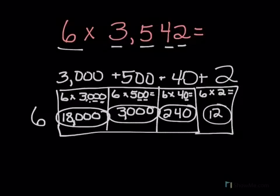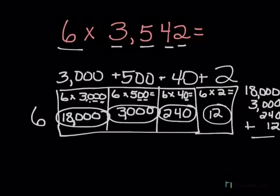I have 4 partial products. Now I just need to add them up. I have 18,000, 3,000, 240, and 12. Add those up. 8,000, 9,000, 10,000, 11. Carry the 1 and the 2. 21,252.